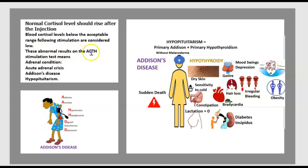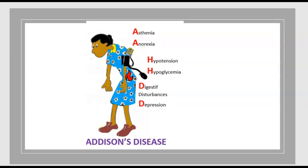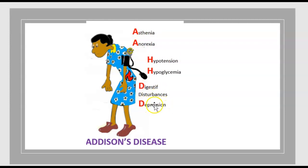These abnormal results on the ACTH stimulation test indicate an adrenal condition: acute adrenal crisis, Addison disease, or hypopituitarism. Addison disease presents with asthenia, anorexia, hypotension, hypoglycemia, digestive disturbance, and depression. There is no skin hyperpigmentation in hypopituitarism.